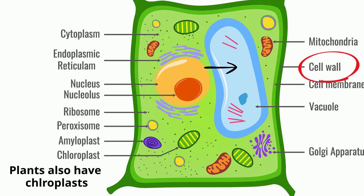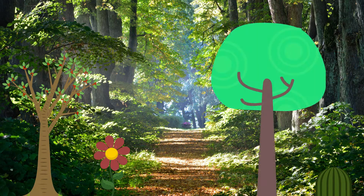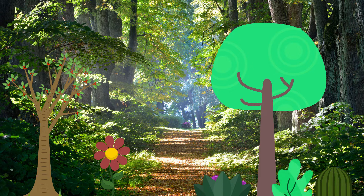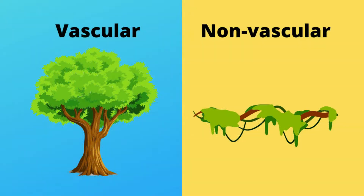There's a huge variety of plants found on earth — roughly 500,000 species. Two major categories are vascular and non-vascular.